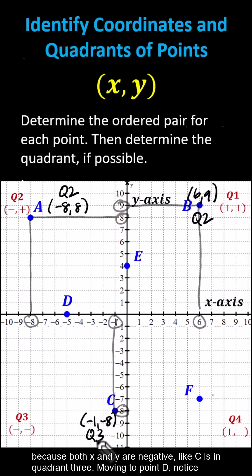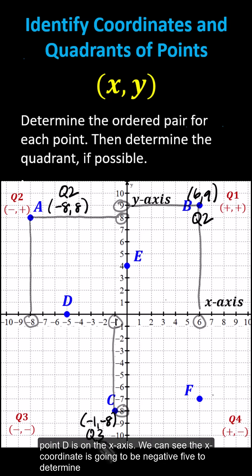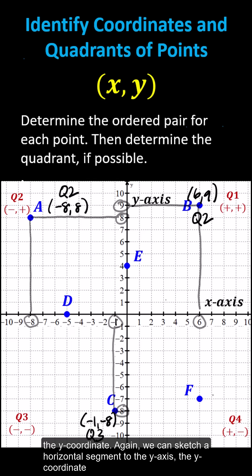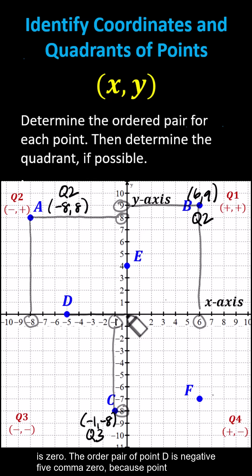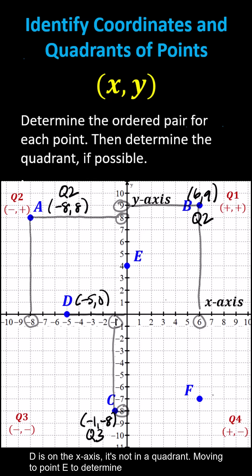Moving to point D, notice point D is on the x axis. The x coordinate is negative 5. To determine the y coordinate, we can sketch a horizontal segment to the y axis — the y coordinate is 0. The ordered pair for point D is negative 5 comma 0. Because point D is on the x axis, it's not in a quadrant.